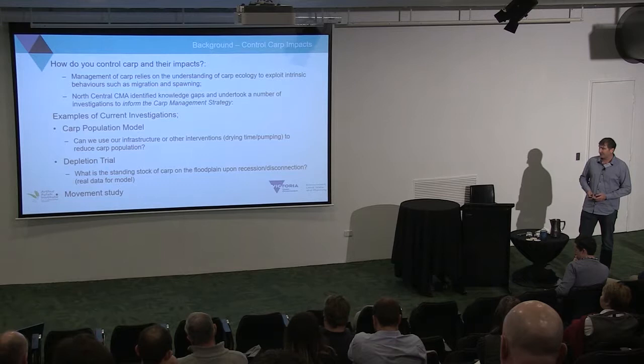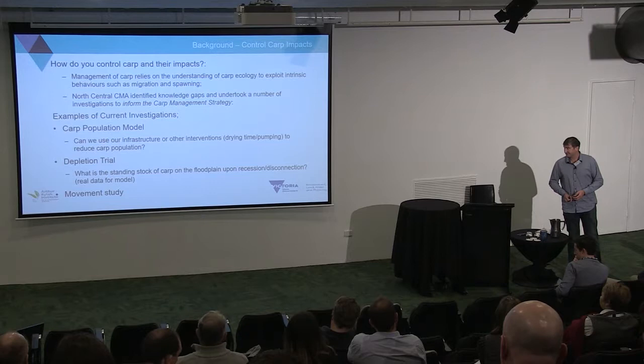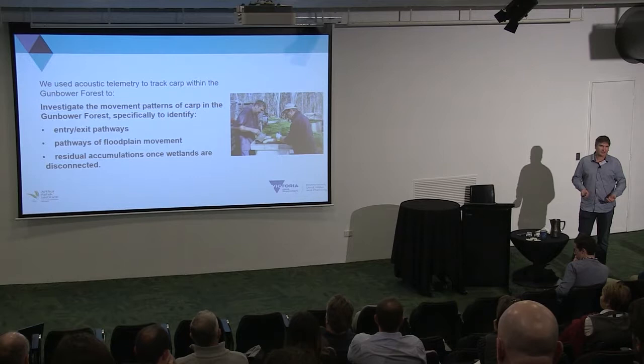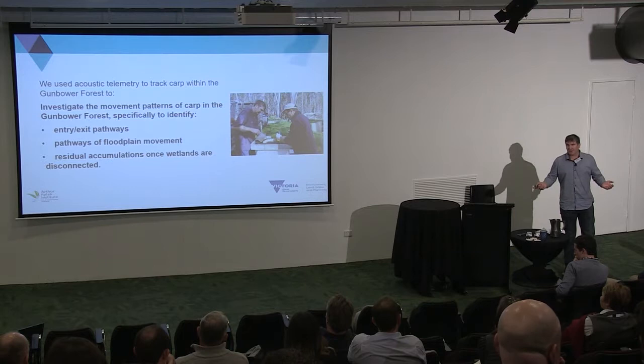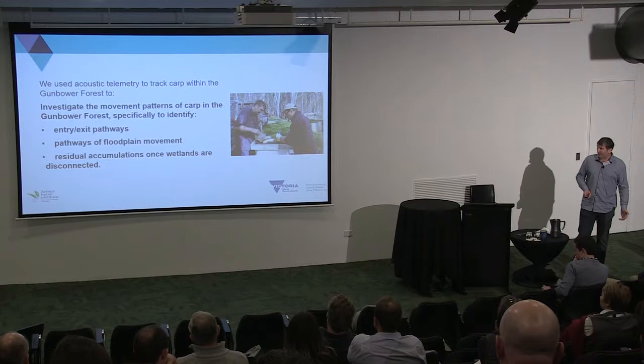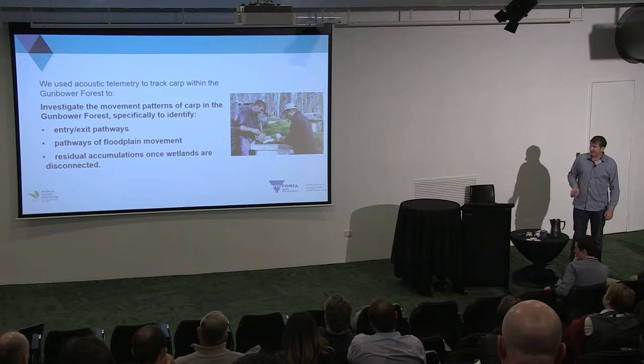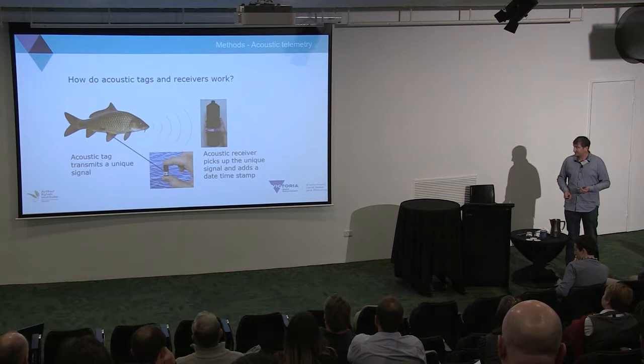They've done depletion trials to work out the standing stock of carp that remain on the floodplain upon recession or disconnection, and that provides real data to the carp population model. They've also undertaken a movement study, which is what I'm talking about today. We used acoustic telemetry to track carp in the Gunbower Forest specifically to identify entry and exit pathways — where do they get on and off the floodplain, where do they go, when and how do they move — and once the floodplain has receded, residual accumulations and any refuge habitat areas. This talk covers only the first two — the pathway movements — because it's early in the study.